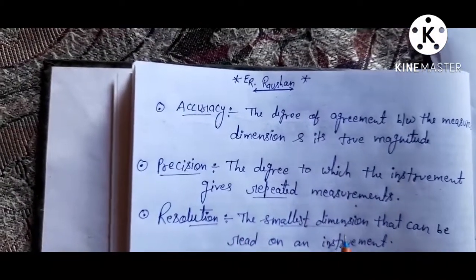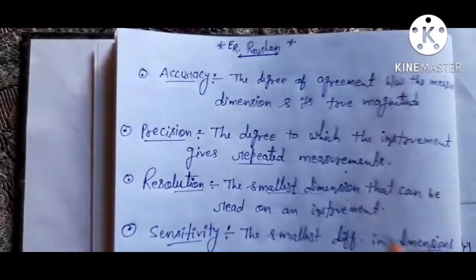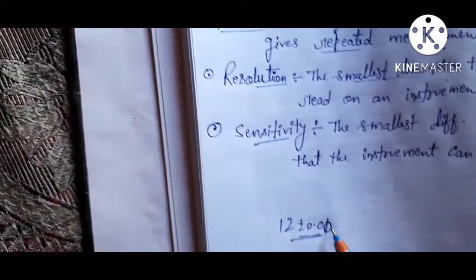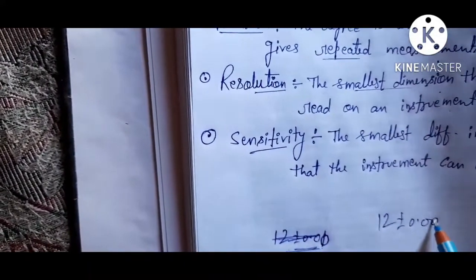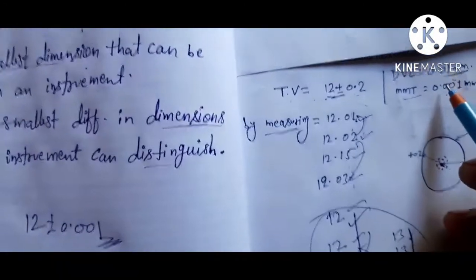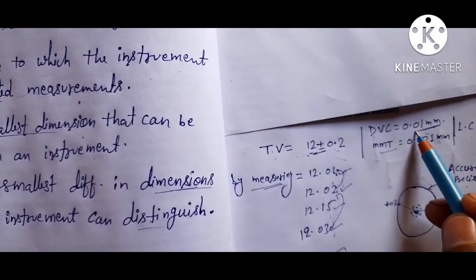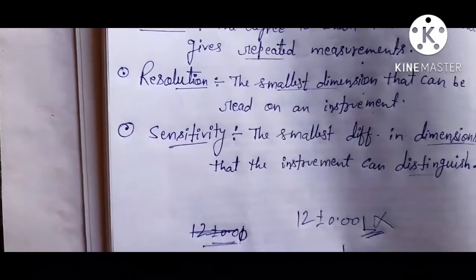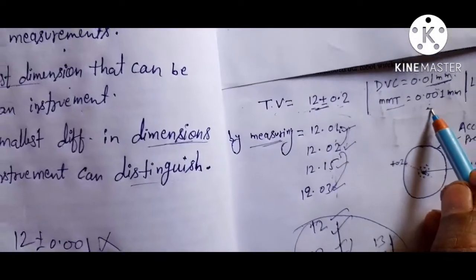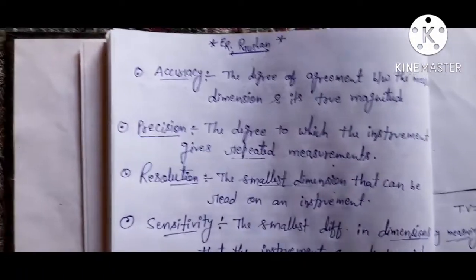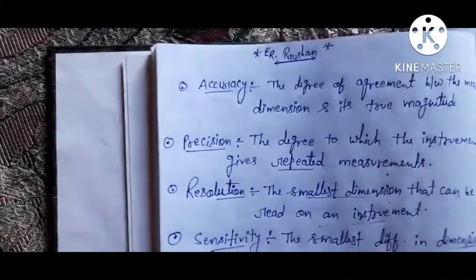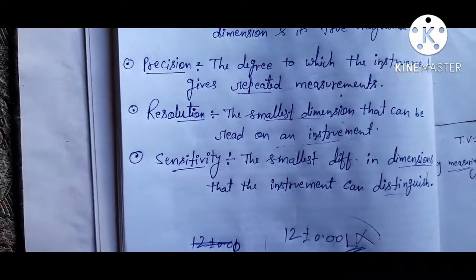Resolution is the smallest dimension that can be read on an instrument. For example, if the true value is 12 ± 0.001 mm and we try to measure it with a vernier caliper (least count 0.01 mm), that is not possible. It must be measured by a micrometer, which has a least count of 0.001 mm. Resolution depends on the least count of the instrument.